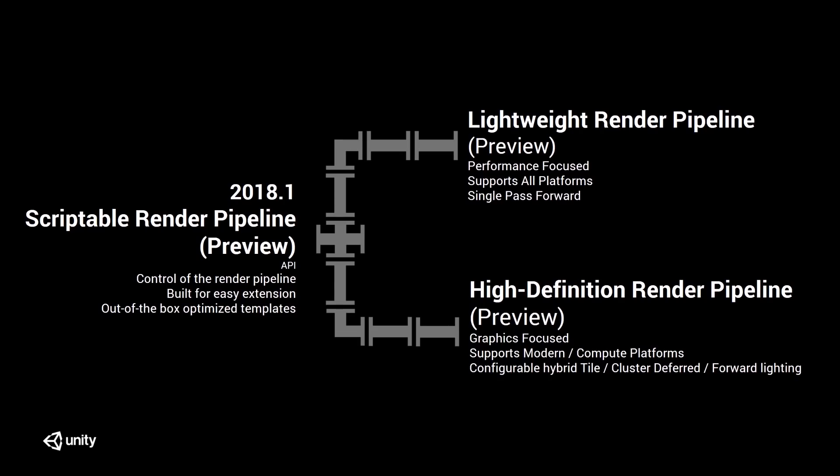Each pipeline was created for a different purpose. The Lightweight Render Pipeline is what we consider our general purpose pipeline, and it covers PCs, all consoles, and mobile. Whereas the High Definition Render Pipeline is designed for consoles and PCs — devices that can handle intense graphical processing. With the introduction of the High Definition Render Pipeline, it prioritizes high fidelity visuals.